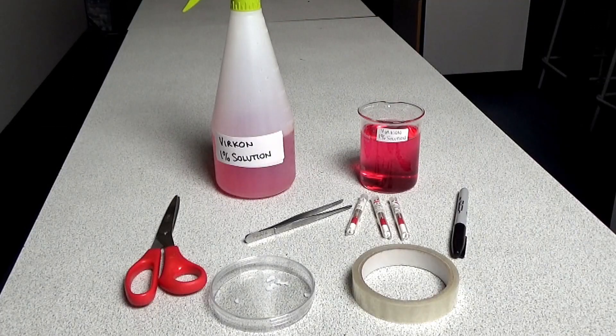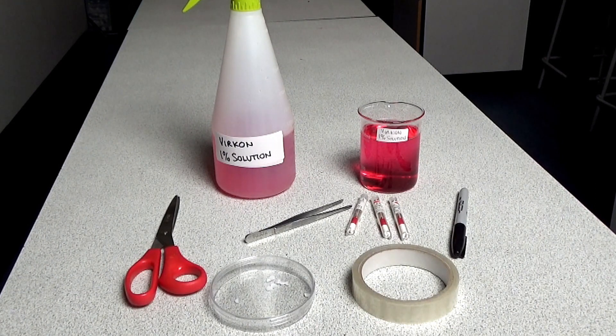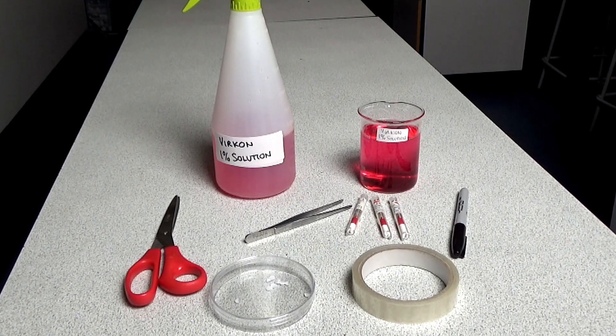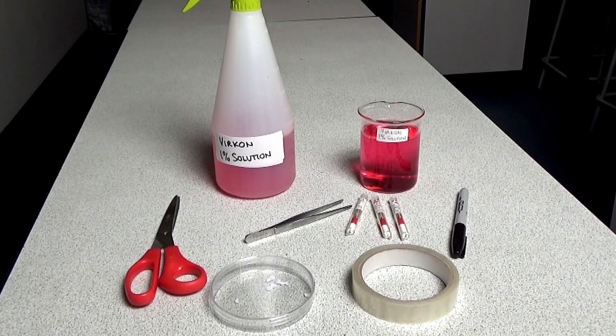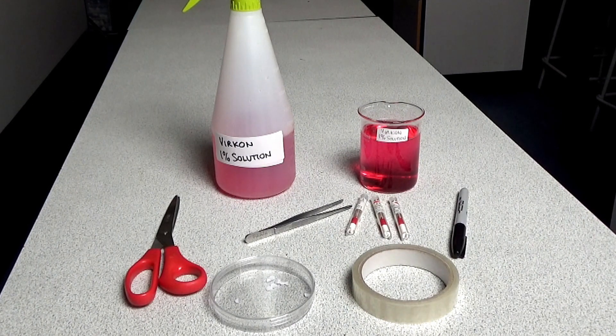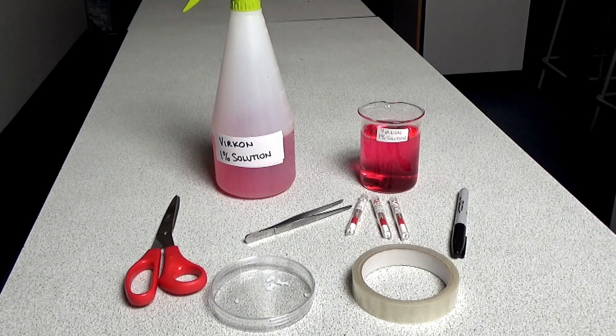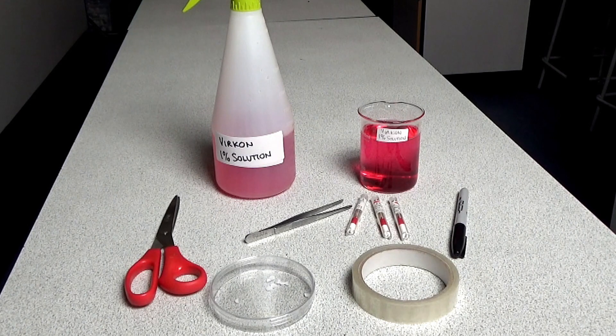You'll also need a permanent marker or chinagraph pencil, blank filter paper discs and a selection of antiseptics to test or alternatively pre-impregnated antibiotic discs, a discard beaker of vircon disinfectant, some forceps, a roll of sellotape and scissors to cut it, and it's also useful to have the vircon disinfectant in a spray bottle.